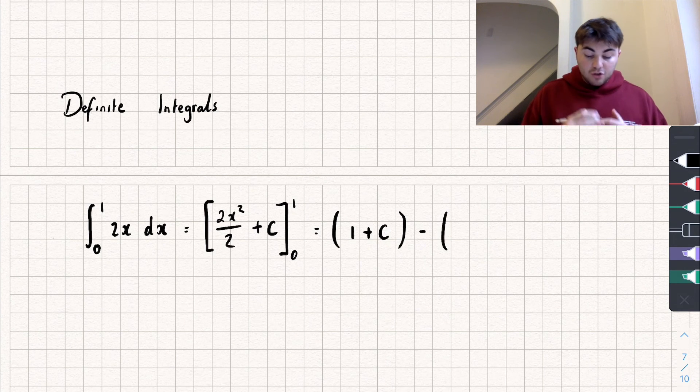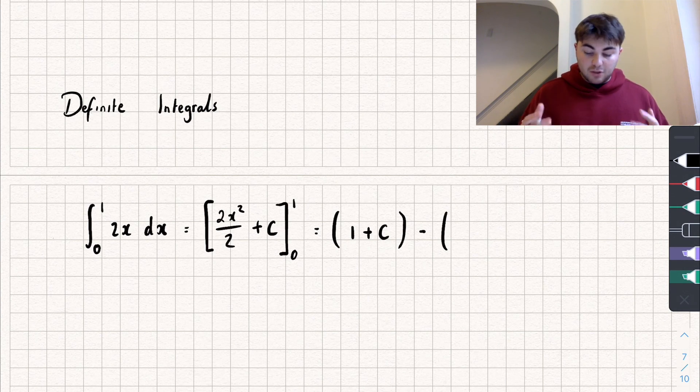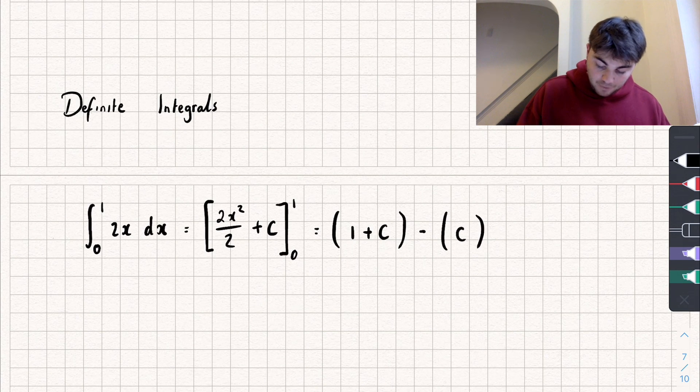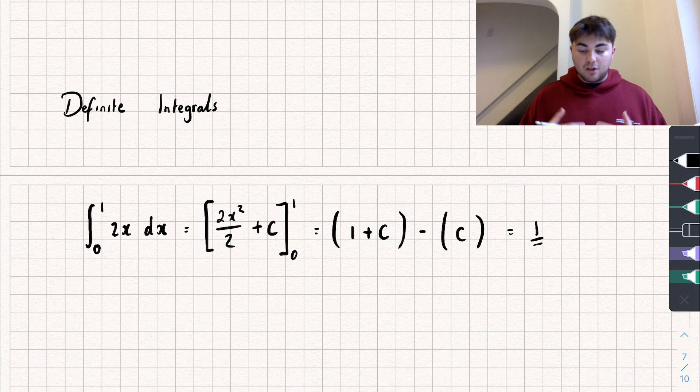So when we substitute in 0 we get 2 multiplied by 0 squared divided by 2 which is 0 plus the constant of integration so plus c. And if we calculate this we get 1 plus c minus c and this gives us an answer of 1.